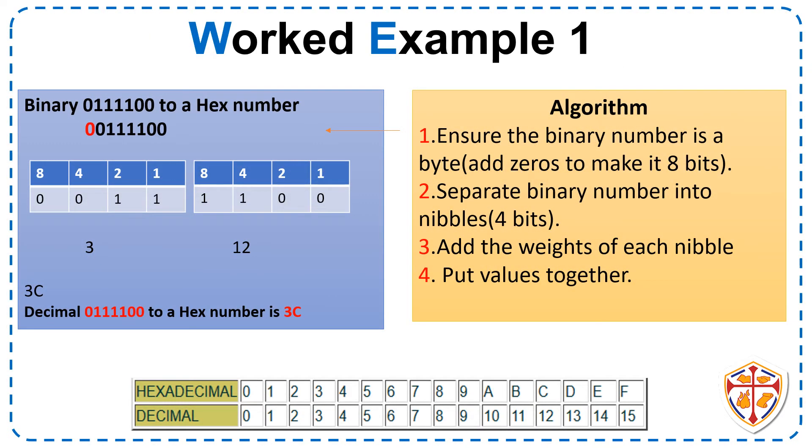Worked Example 1. Question 1. We are given a 7-bit binary number to convert to a hexadecimal number. Let us follow the algorithm to solve this problem. Step 1. Ensure the binary number is a byte. Add zeros to make it 8 bits. So we have 7 bits. We will add one zero to make it 8 bits, which is a byte.